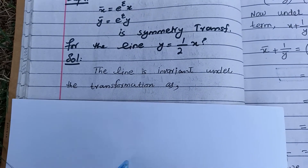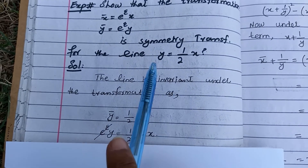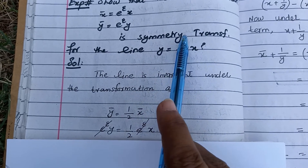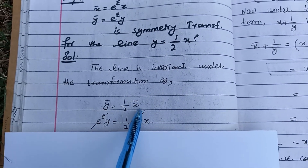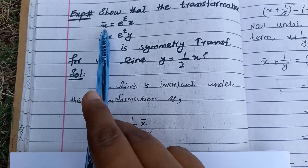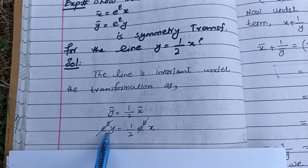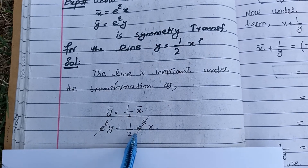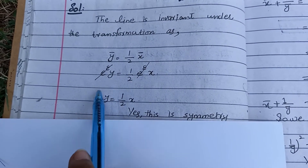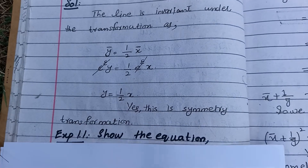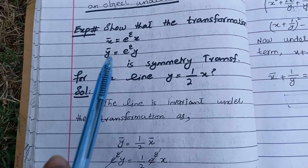The line is invariant under the transformation. To check invariance, you replace your original equation or curve with bar notation — write ȳ = (1/2)x̄. Then substitute the given transformation values: ȳ = e^ε · y equals (1/2) times the value of x̄. You can cancel these two terms and are left with the original equation. So yes, this is the symmetry transformation.